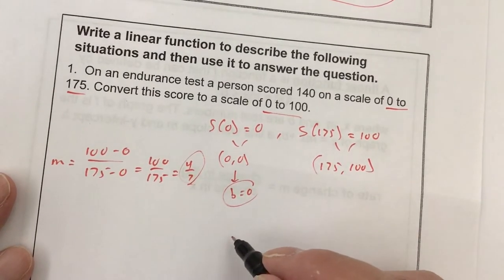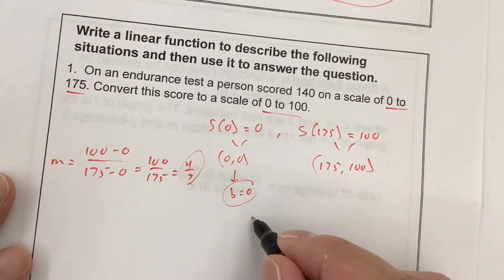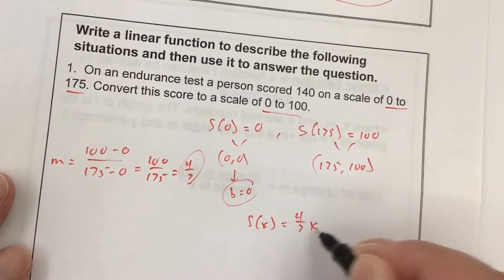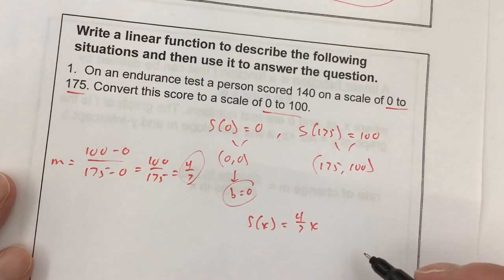So I already know my slope and I know my y-intercept. My function here, s(x) just equals (4/7) times x. You can put the plus 0 if you'd like, but you don't need to.